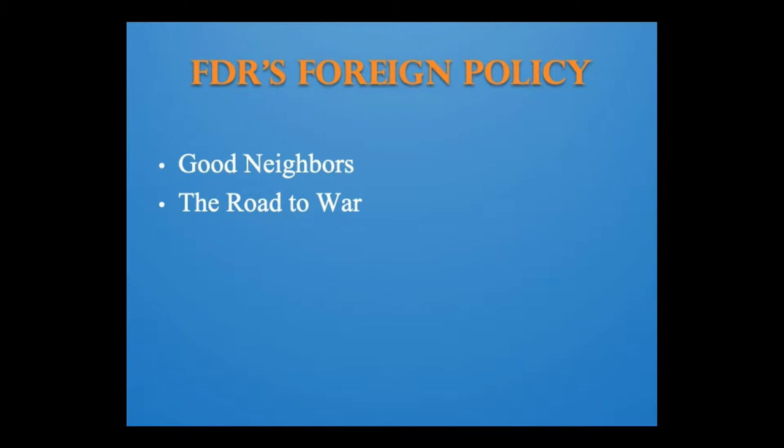Roosevelt became more and more alarmed by Hitler's actions in Germany and Europe, but in 1937 he called only for a quarantine of aggressors. Roosevelt had little choice but to follow the appeasement policy of France and Britain, who hoped that agreeing to Hitler's demands could prevent war. In 1938, British Prime Minister Neville Chamberlain returned from the Munich Conference, which awarded the Sudetenland to Hitler, promising 'peace in our time.'